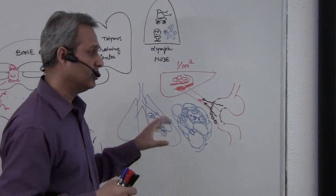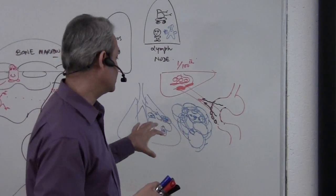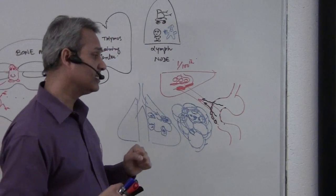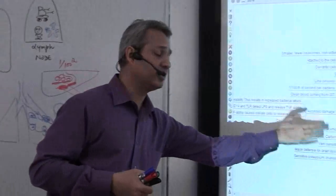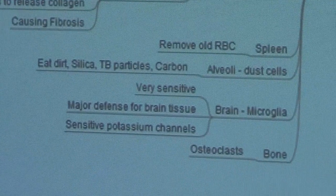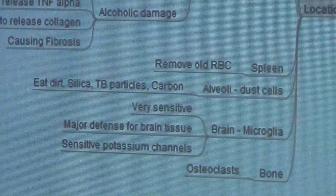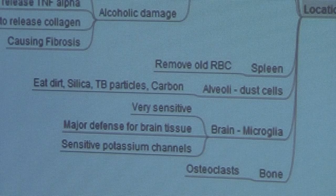That is in the alveolar and of course in TB patients you would see this a lot. Very, very important thing. Inside the brain, the macrophages which live in the brain are called microglias. Microglias are actually microphages.